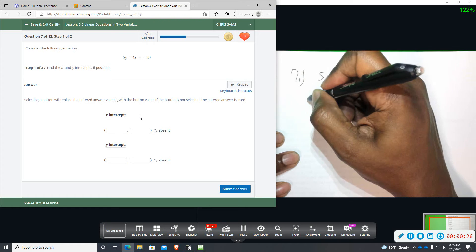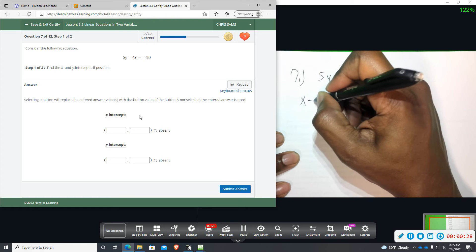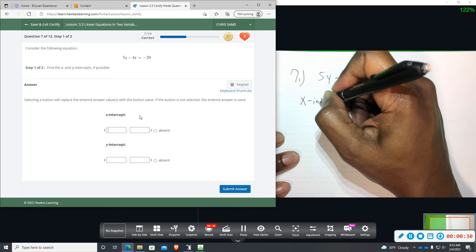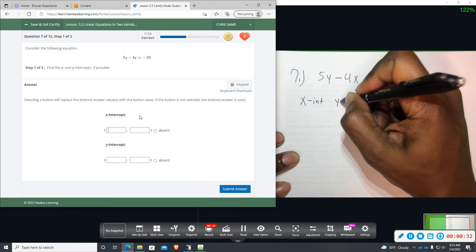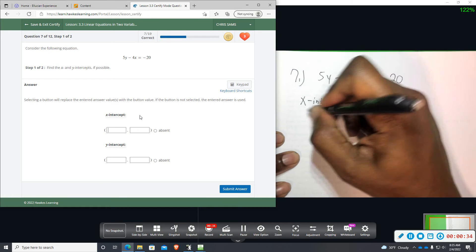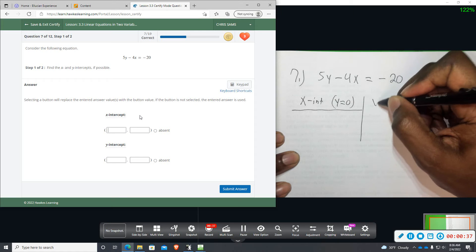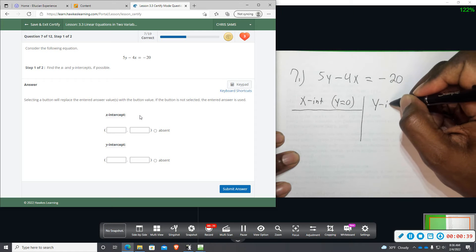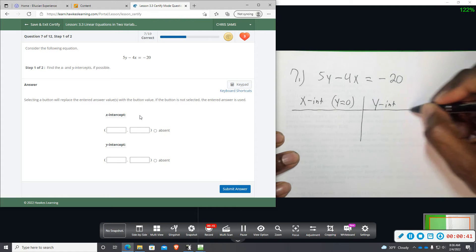Okay, so we're going to find the x-intercepts, and in that event, we know that y equals 0, and then we're also going to find the y-intercepts, and then in that case, x is 0.